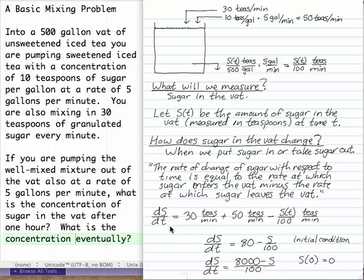So the differential equation, check the units here. That helps you keep things straight, is DSDT. The units of DSDT are teaspoons per minute. DSDT is 30 teaspoons per minute plus 50 teaspoons per minute minus S of T over 100 teaspoons per minute.